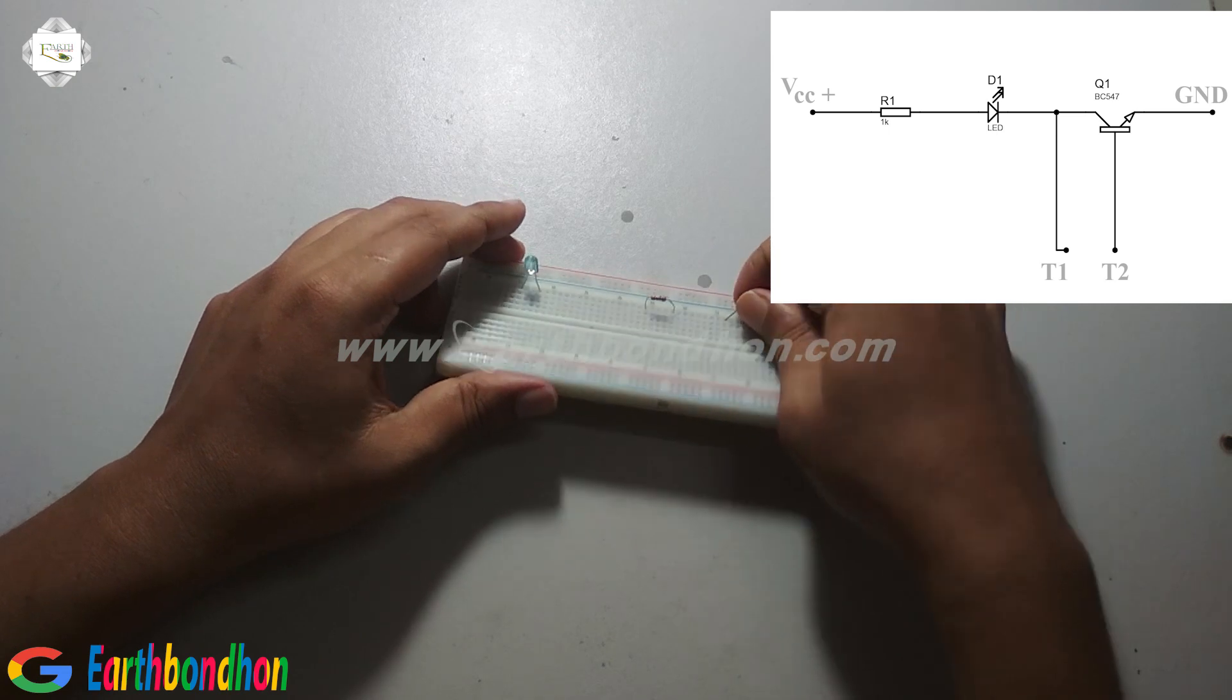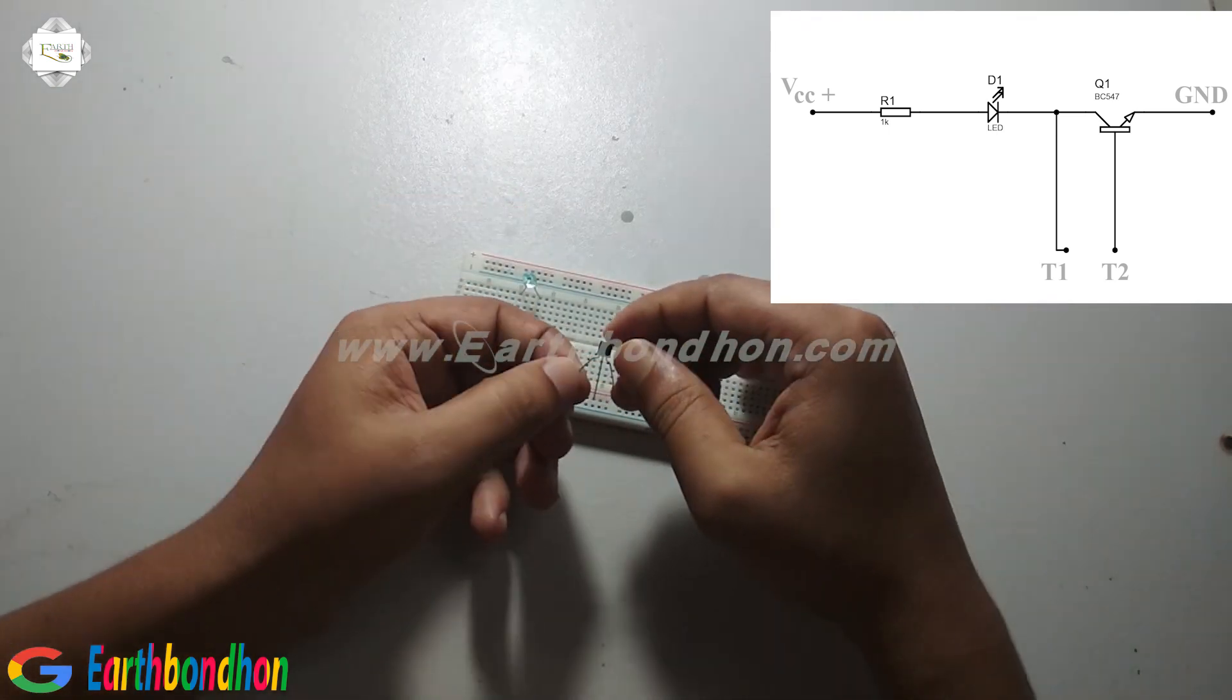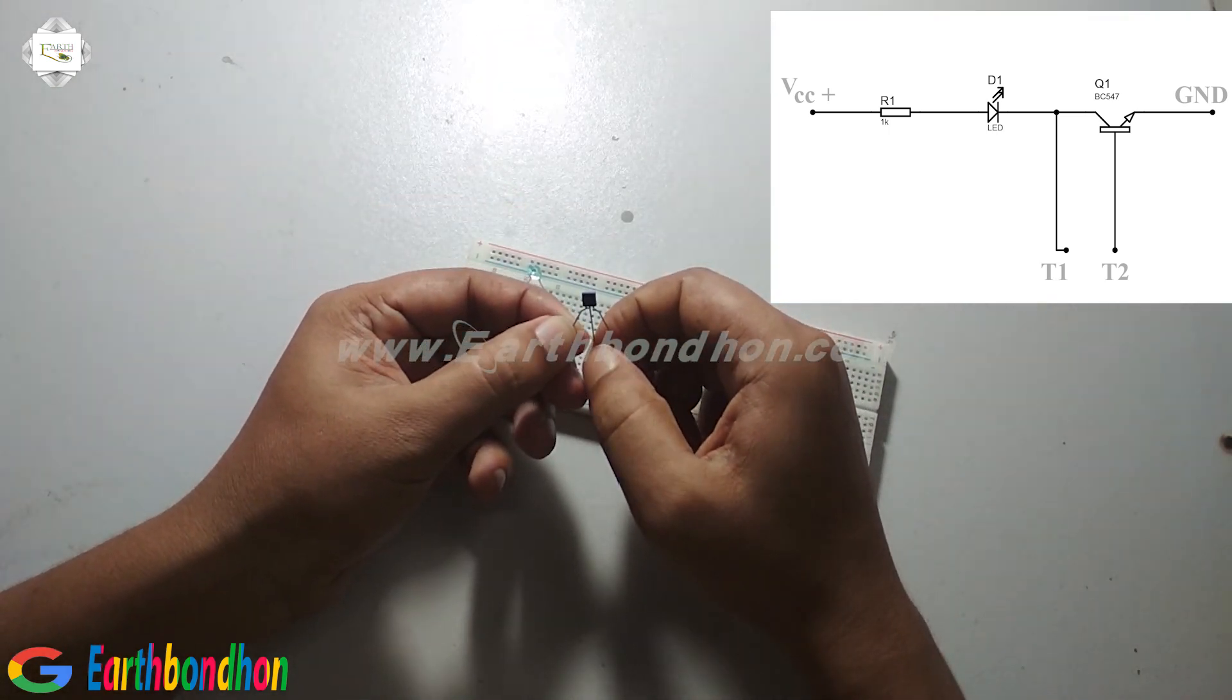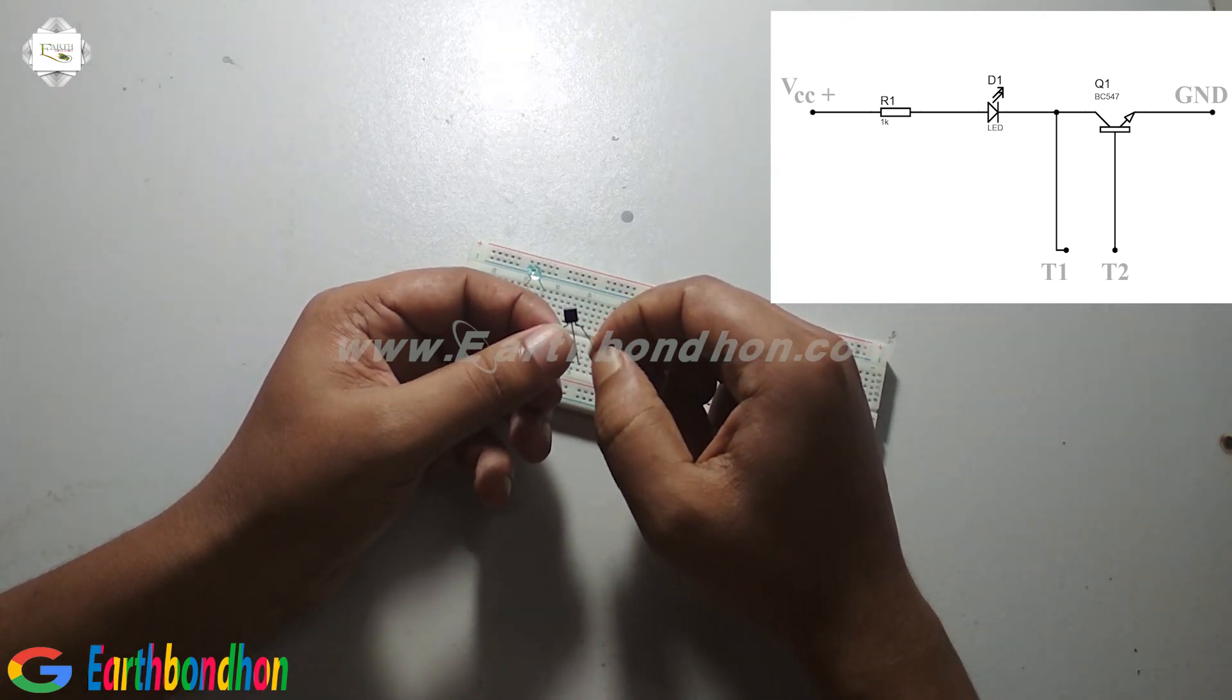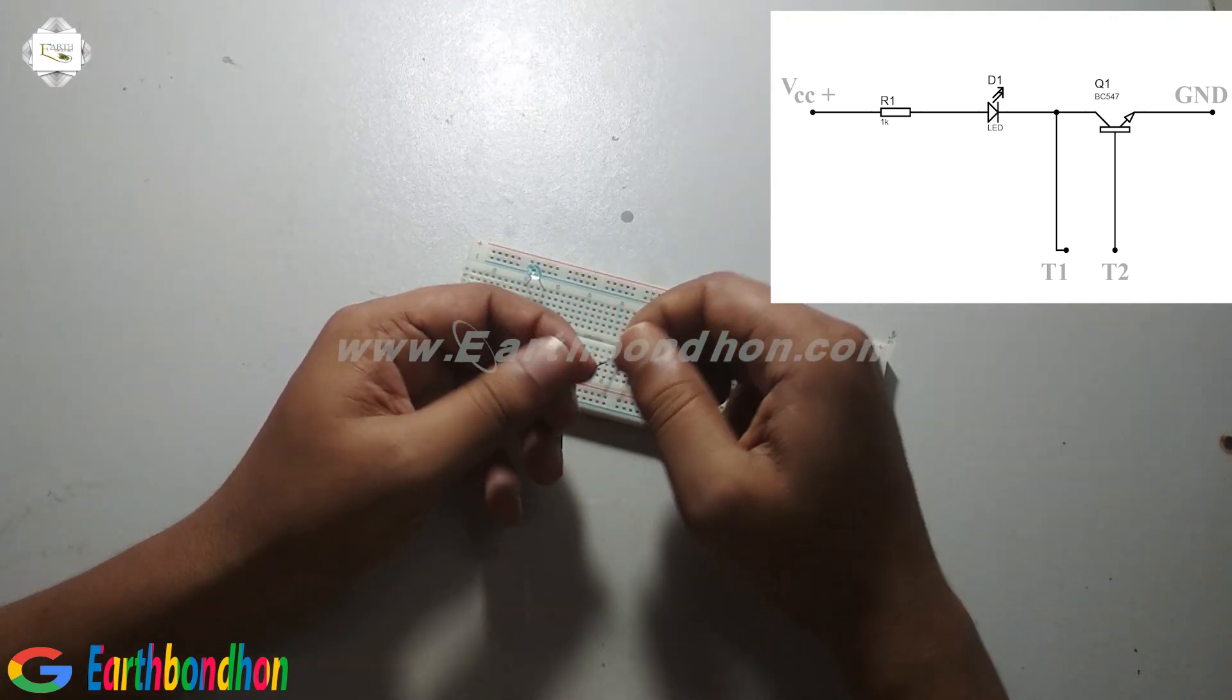This is emitter, middle point is base, and this is collector. Emitter, base, collector.